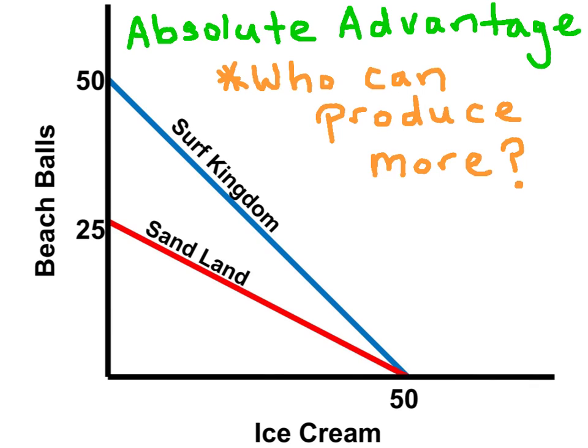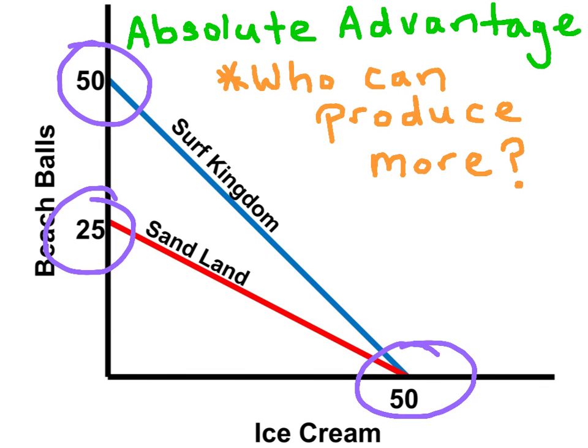If Surf Kingdom put all their resources into beach balls, they can produce 50 of them. Sandland, if they put all their resources into beach balls, they can produce 25. Because Surf Kingdom can produce more beach balls than Sandland, Surf Kingdom has the Absolute Advantage in beach ball production. When it comes to ice cream, they both can produce 50 units, so nobody has the Absolute Advantage in ice cream production.